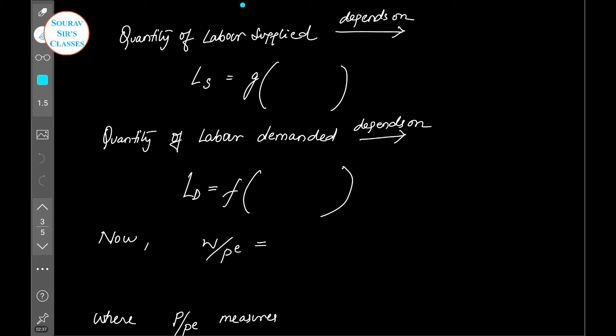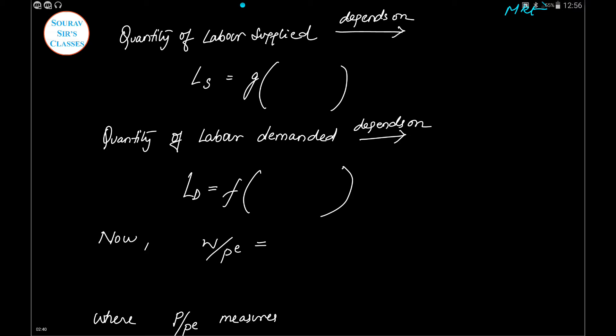Now in any market we require quantity demanded and quantity supplied for equilibrium. So let's get started. Quantity of labor supplied will depend on the expected real wage. Now what is expected real wage? It is the nominal wage—real wage deflated by the expected price level PE. And the quantity of labor demanded depends on the actual real wage, W/P.